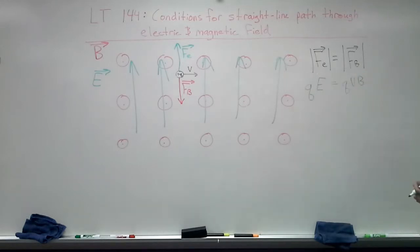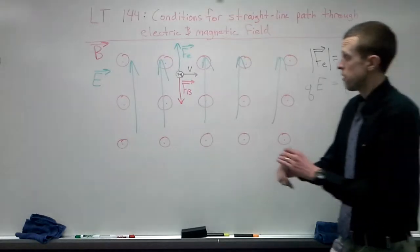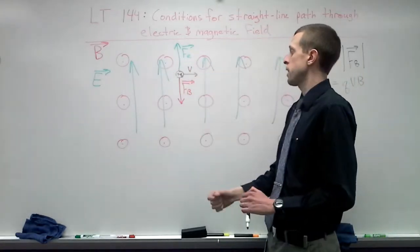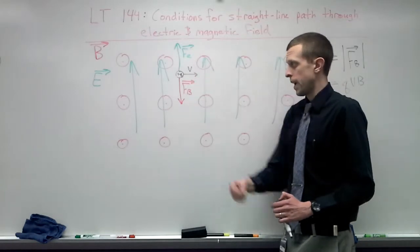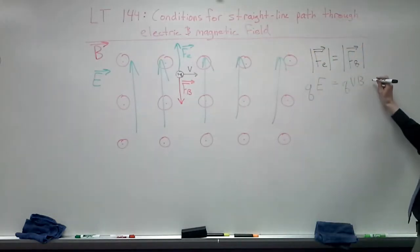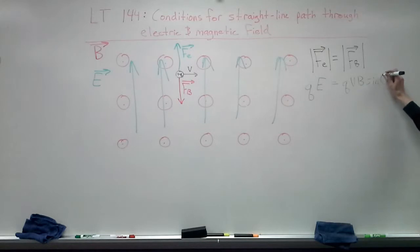Which again is going to be a 90 degree angle here. Our velocity vector is pointing to the right, and our magnetic field is pointing outward as a 90 degree angle, but in general times sine theta.